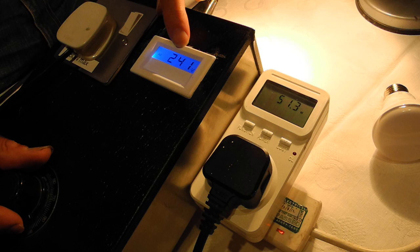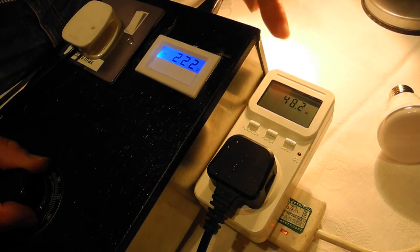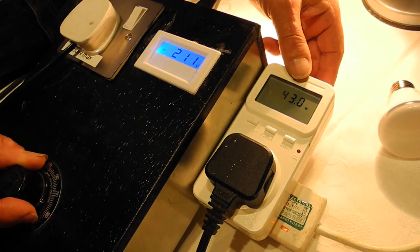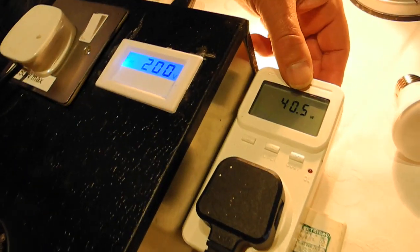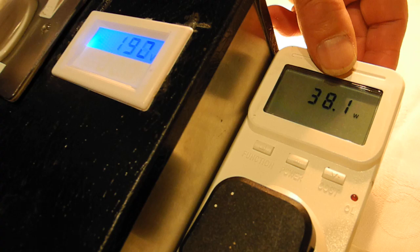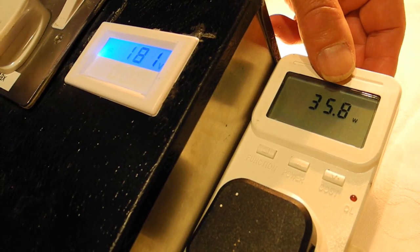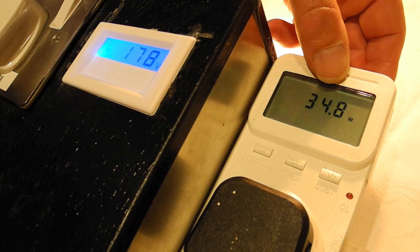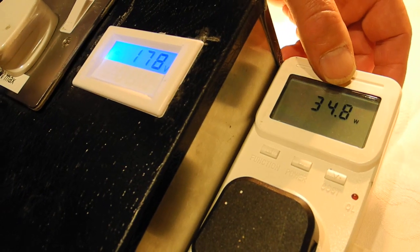Now when I reduce the voltage we are taking it down past 220. If you watch what happens on the power meter you'll see that the power drawn reduces as the voltage goes down and I'll take it right down to 180 volts so that you can see the effect of an extreme voltage reduction. There we are, we're down to about 35 watts compared with over 50 when we were operating at full voltage.